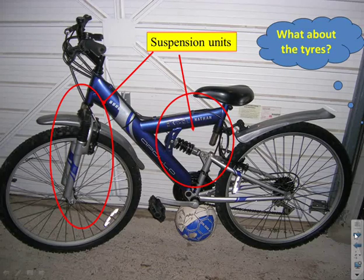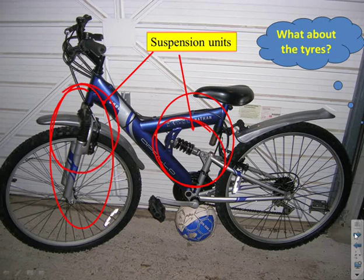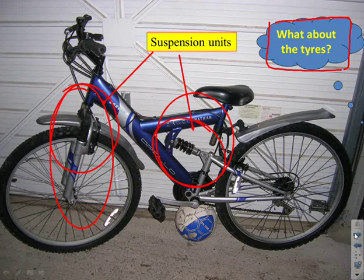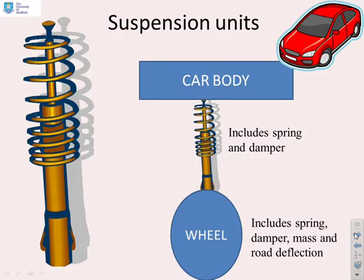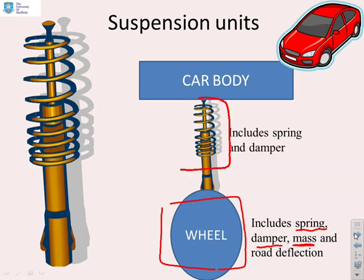Here's an example of where you'd encounter such a system. A mountain bike has suspension units that are essentially a spring and a damper, and tyres also have implicit springiness and damping. Suspension units are very common in cars. The car wheel has springiness, a damper effect, and also a mass. There's an additional spring and damper connected between the wheel and the car body — this is a really common unit that's important to know how to model.